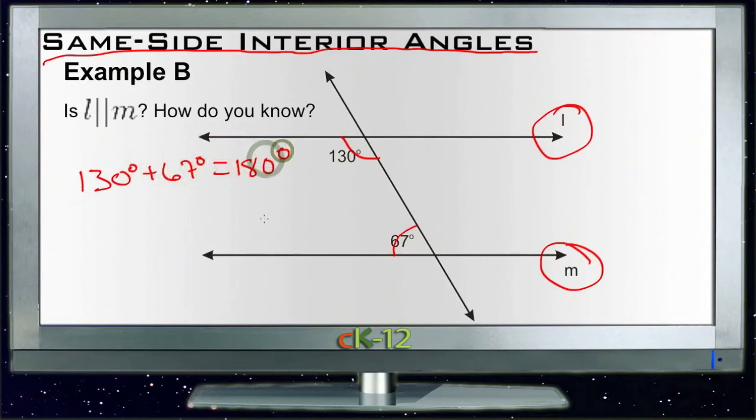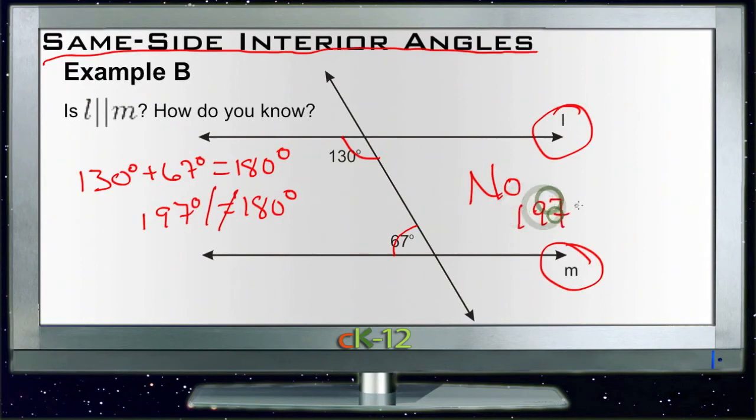So L is not parallel to M because 197 is not equal to 180.